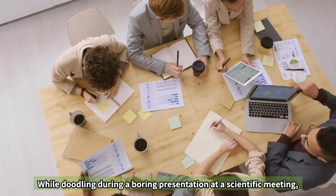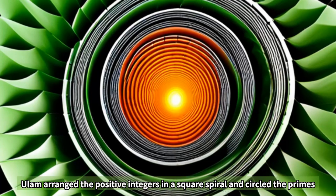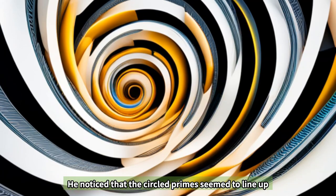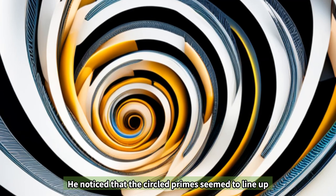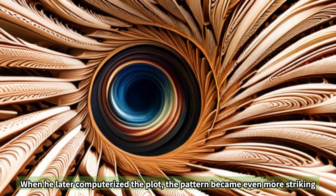While doodling during a boring presentation at a scientific meeting, Ulam arranged the positive integers in a square spiral and circled the primes. He noticed that the circled primes seemed to line up along certain diagonal lines. When he later computerized the plot, the pattern became even more striking.